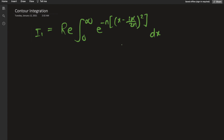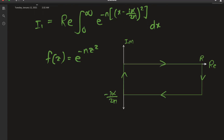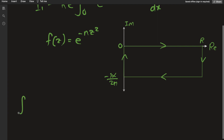For our convenience, let's define f of z to be the integrand of the Gaussian integral: e to the negative n z squared. As is common with integrals solved using complex analysis on this channel, we define a contour of integration. The direction of integration is going to be clockwise, as indicated by the arrows.